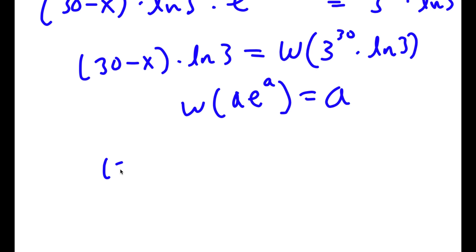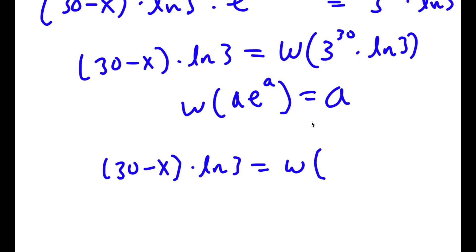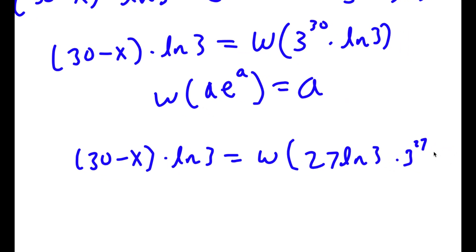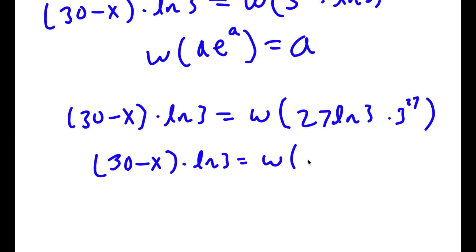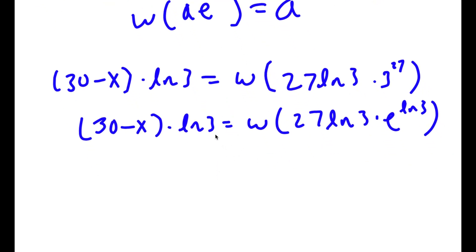So I rewrite: (30 minus x) times ln 3 equals W Lambert of 27 ln 3 times 3 to the power of 27, since I factor out 3 to the power of 3 from 3 to the power of 30. This becomes W Lambert of (27 times ln 3 times e to the power of ln 3 times 27). The W Lambert function then gives 30 minus x equals 27, because the expression is now in the correct form a times e to the power of a.